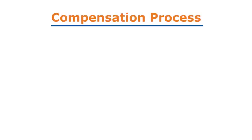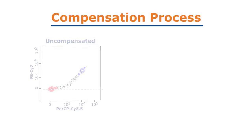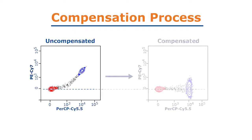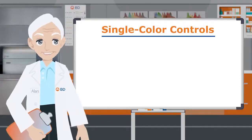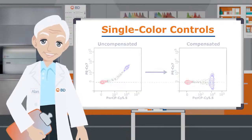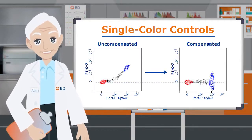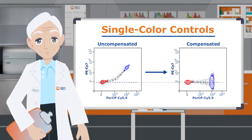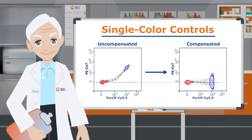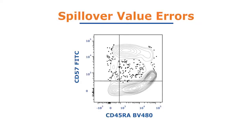In previous videos, we've seen how compensation is the process by which we subtract background due to fluorescence spillover. To perform this compensation, you must run single-color controls. The cytometer software then uses these controls to create a matrix of spillover values and corrects for the background due to spillover. Small errors in calculating spillover values can have major impact on the quality of multicolor assays.